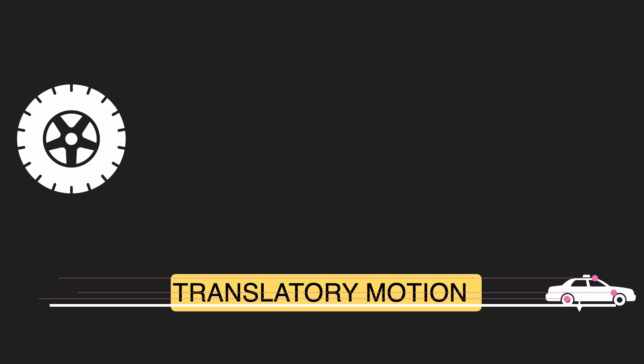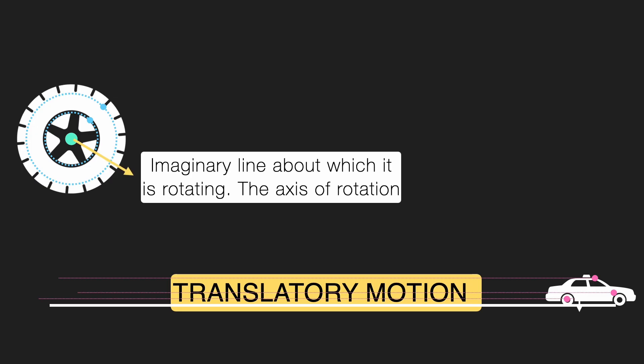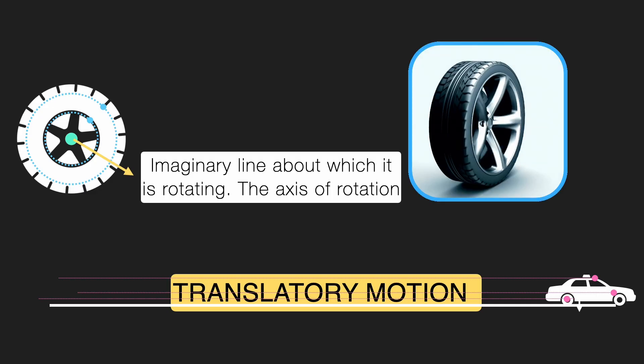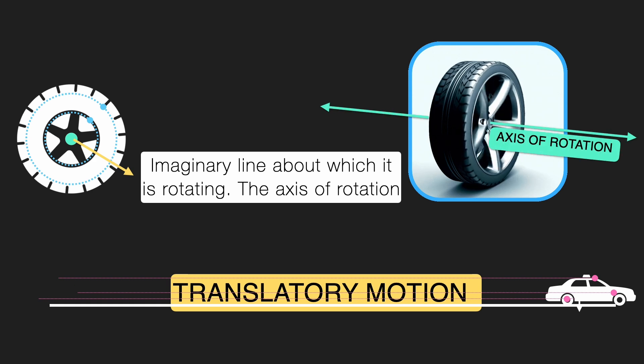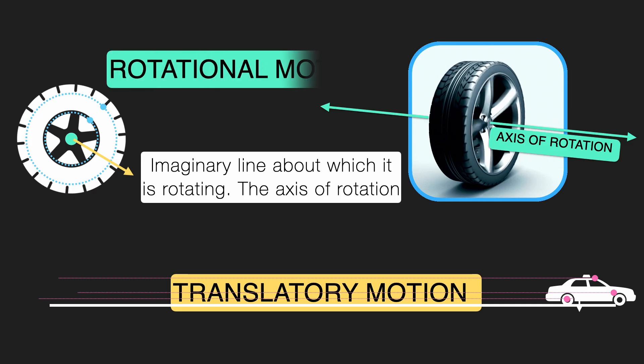Now let's look at the tire of the same car which is rotating. I have marked two points on the tire. Watch closely — those points are not moving in a straight line; they are moving in a circular path, round and round, and there is a fixed center point about which it is rotating. That's actually an imaginary line passing through that center about which these points are rotating — that's called the axis of rotation. When the tire rotates, all the points on the tire are rotating about that imaginary axis, and this kind of motion is called rotational motion.